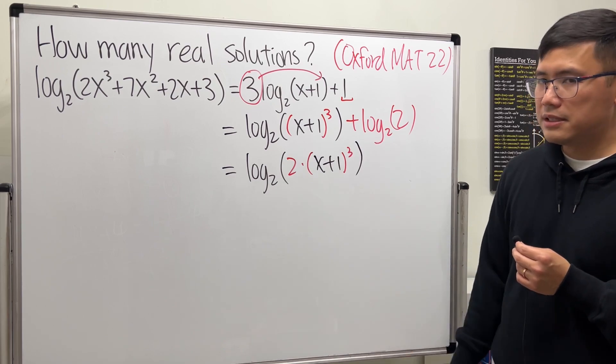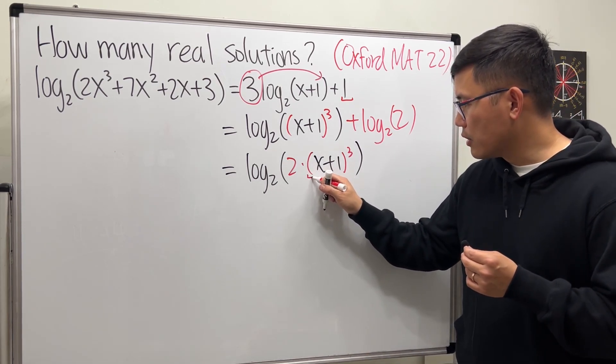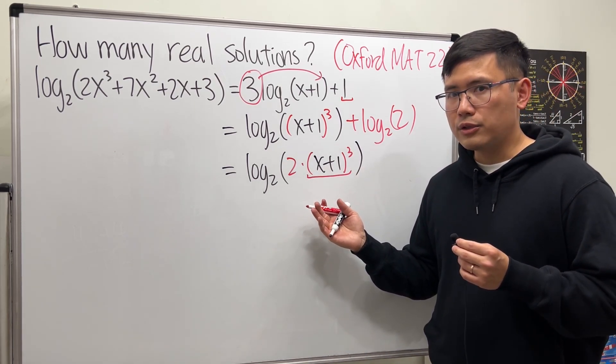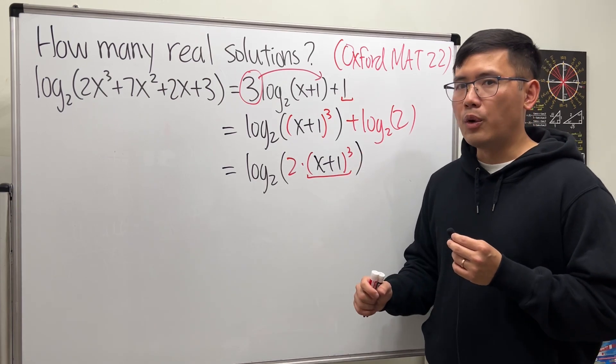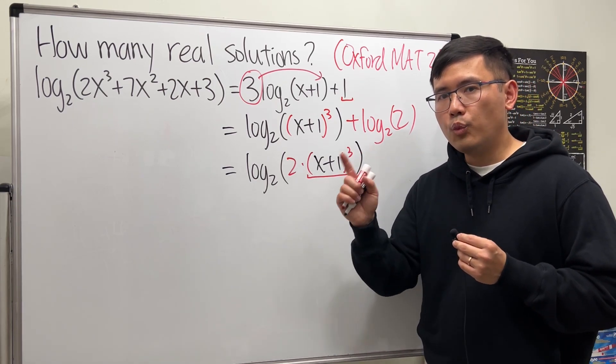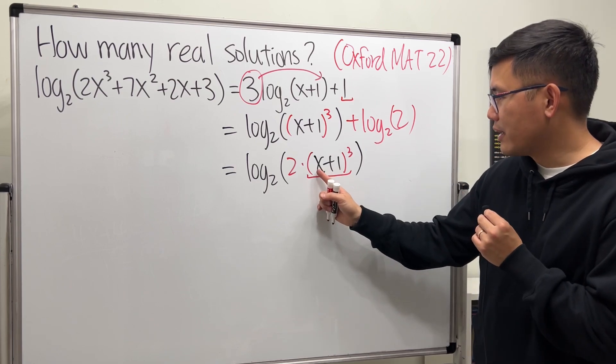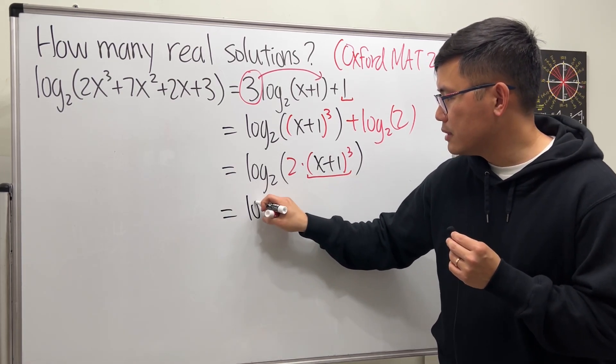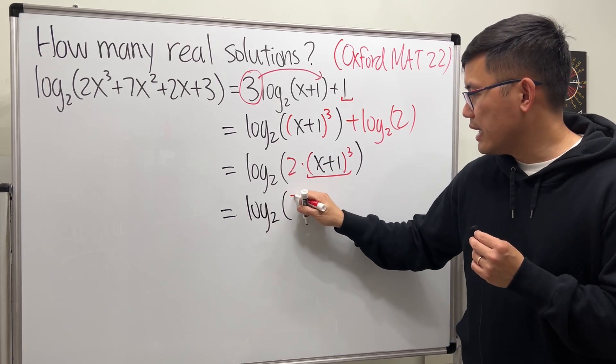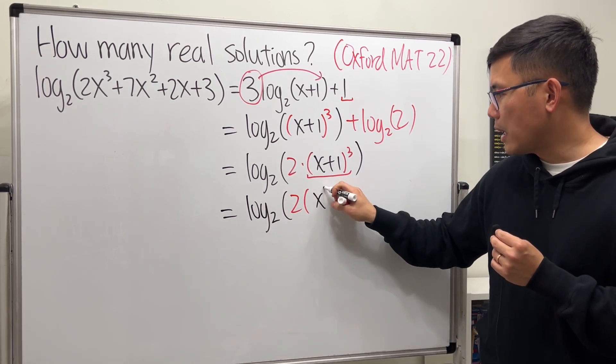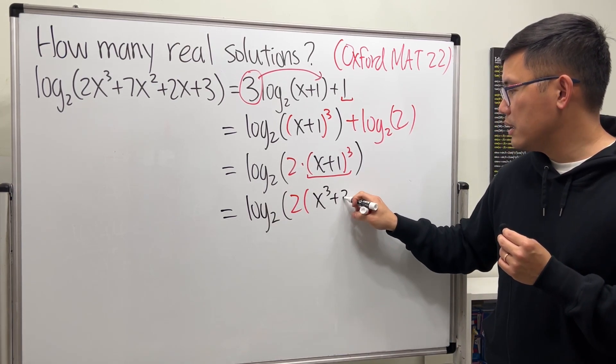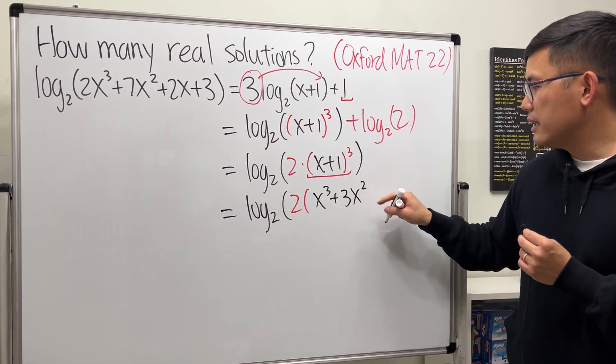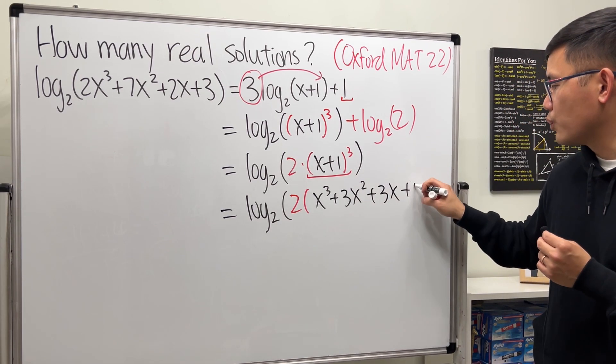All right, let's just multiply this out. Work out this right here first though. You can use Pascal's triangle. When we have the third power, the coefficients are 1, 3, 3, 1. Thanks to this, it's just x plus one. If you multiply this out, you will get x³ + 3x² + 3x + 1.